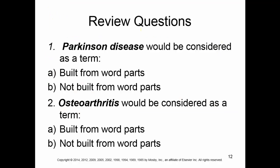For review questions: Parkinson's disease is a term not built from word parts — it's an example of an eponym, named after the physician who first identified the disease. As opposed to osteoarthritis, which is a term built from word parts. We already talked about arthritis; osteo refers to bone. So you can quickly put together the meaning of that term without going into too much depth.